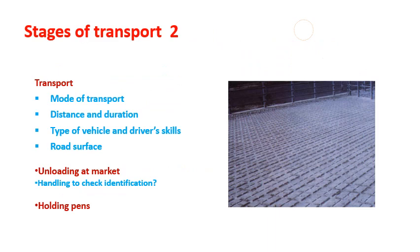In the second stage of transportation, the mode of transport determines the transit, which is connected to the distance and duration. According to the duration, we need to take care of the animals. The type of vehicle and the skill of the driver play very important roles, and the road condition is also an important factor. After reaching the destination or abattoir, there is unloading, proper handling, identification, and then animals go to the holding pen or lairage.